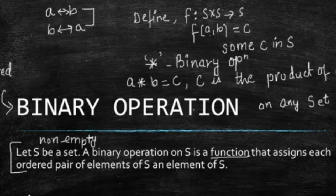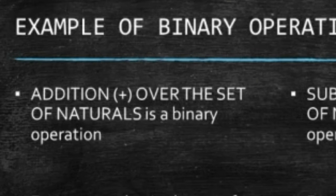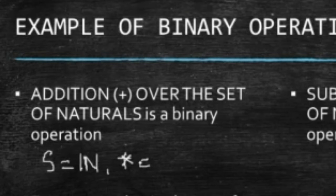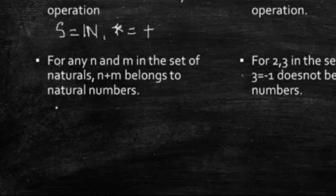So, let us now see some examples of binary operations. The very first example is, addition over the set of naturals. So, when we have a question of binary operations, very first thing, or very first observation is, what is the given set, and what is the binary operation? Which operation is given? So, here the operation is given plus. Now, I have to prove, it is a binary operation.